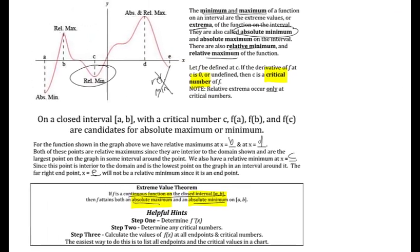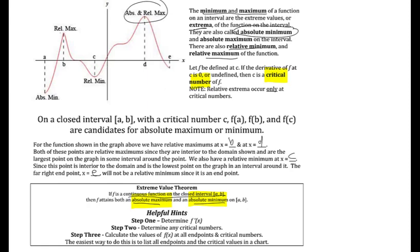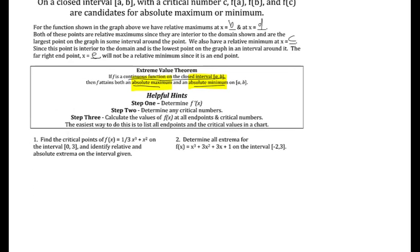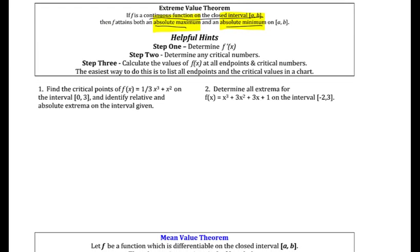An absolute max can occur at a relative max, and an absolute max doesn't have to be at a relative max. Same for absolute min — it could be at a relative min or it may not be. Our candidates for the absolute max are all the critical numbers and the endpoints. Any time the function is turning around it will have a relative max or min, and checking the endpoints gives us all candidates for the biggest and smallest values.